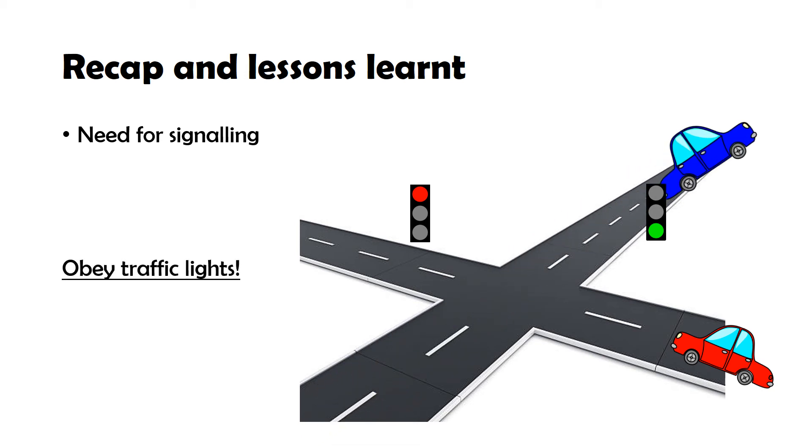So the lesson is that you should obey traffic lights. In this game, we learned how to analyze a game to find its Nash equilibrium. We also discovered that sometimes you need a signaling mechanism to arrive at an actual solution.